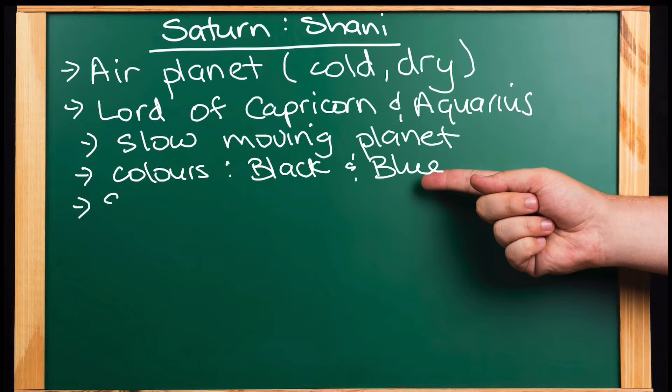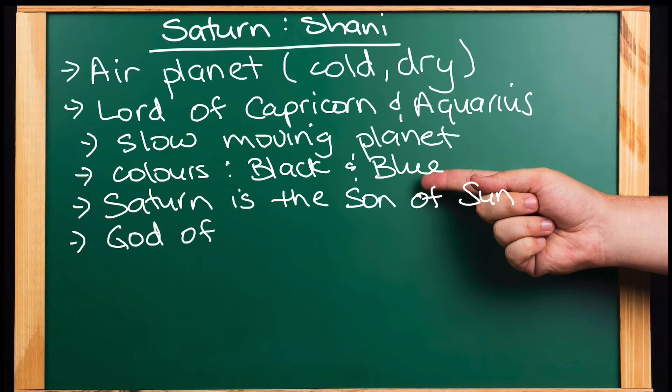In Vedic astrology, Saturn is also, as far as relationships of the planets, Saturn is the son of the sun. So son of the sun. And you know, father and son. Saturn is also known as god of justice. So you got to make sure you're doing right by Saturn.